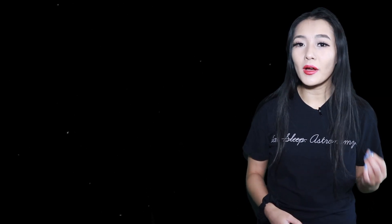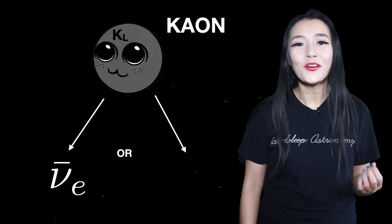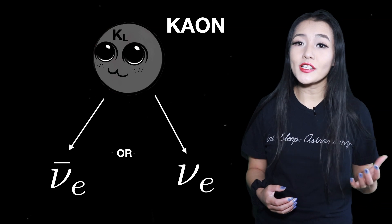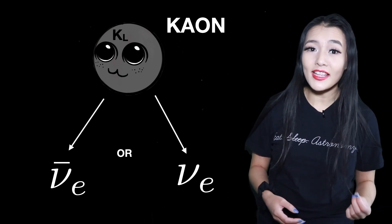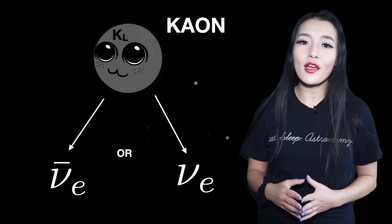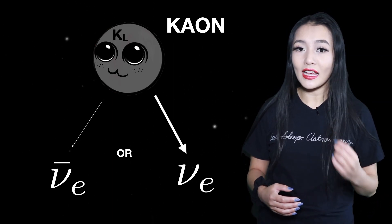But CP-violation has been observed. Physicists looking at the decay of K-on particles, which can decay into either an electron antineutrino or an electron neutrino — if the decays were CP-symmetric, you would expect the rate of decay to be the same for both paths. But in practice, they observed that the K-on was more likely to decay into an electron neutrino by a tiny fraction. This was undeniable proof that physics does distinguish between matter and antimatter, which may be the reason why our universe is matter-dominated.